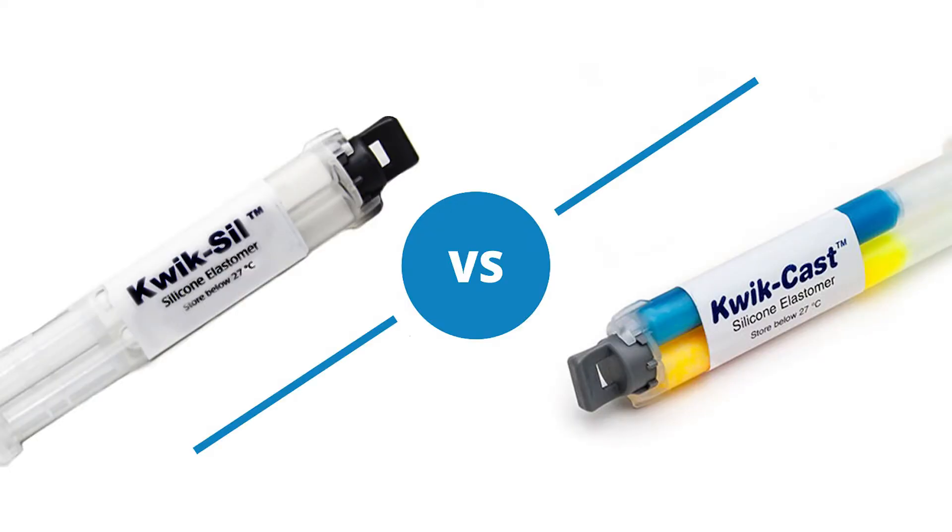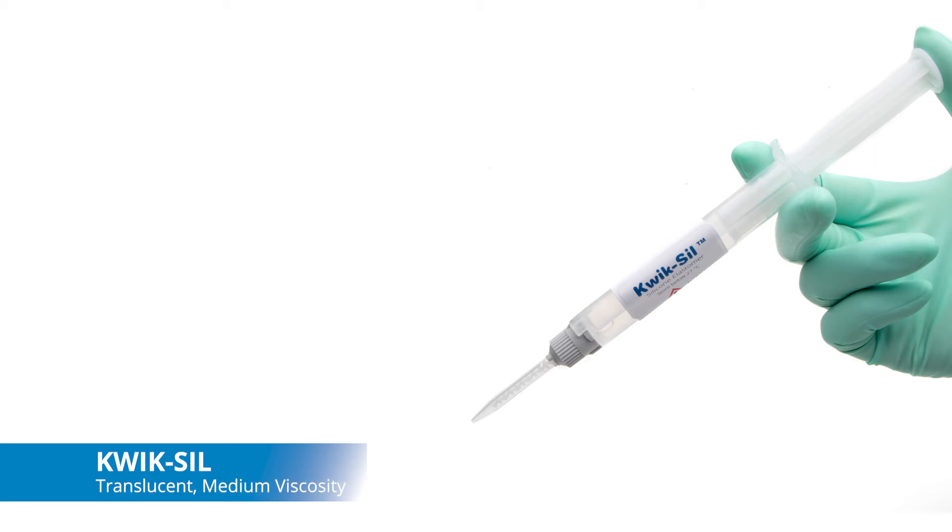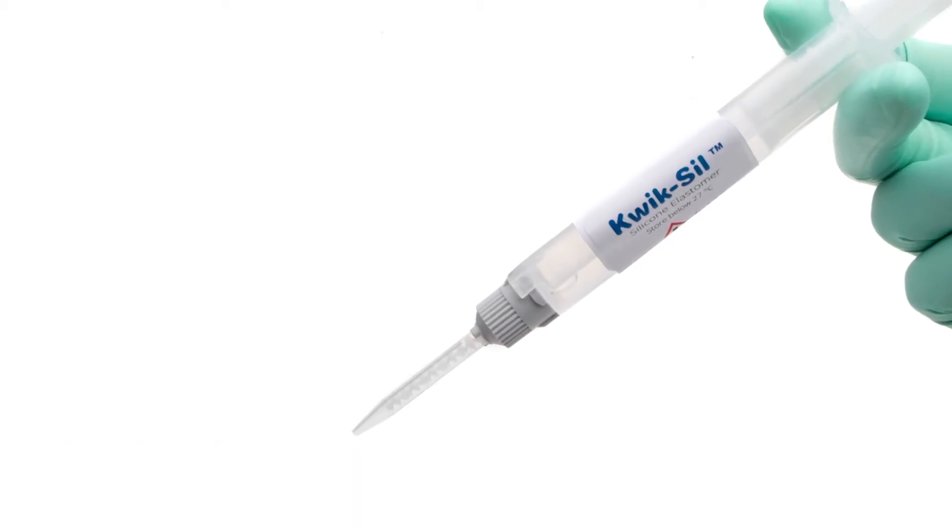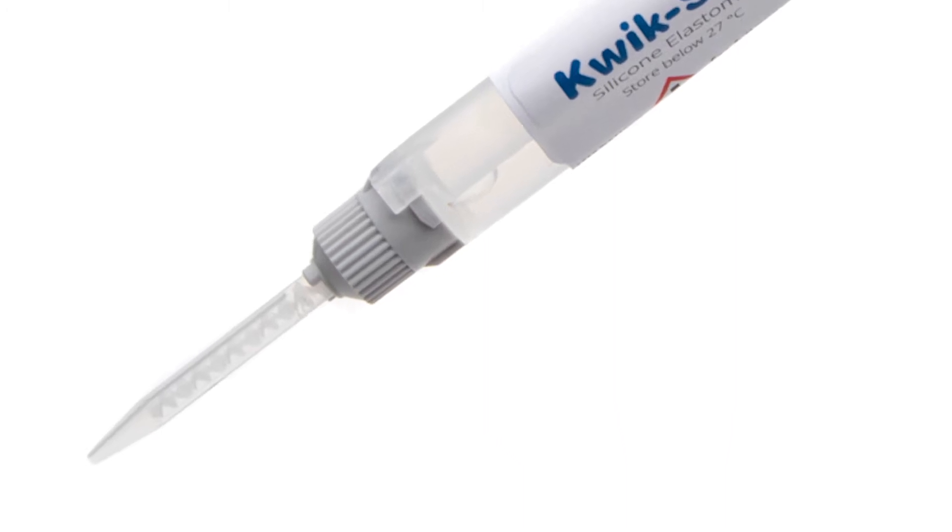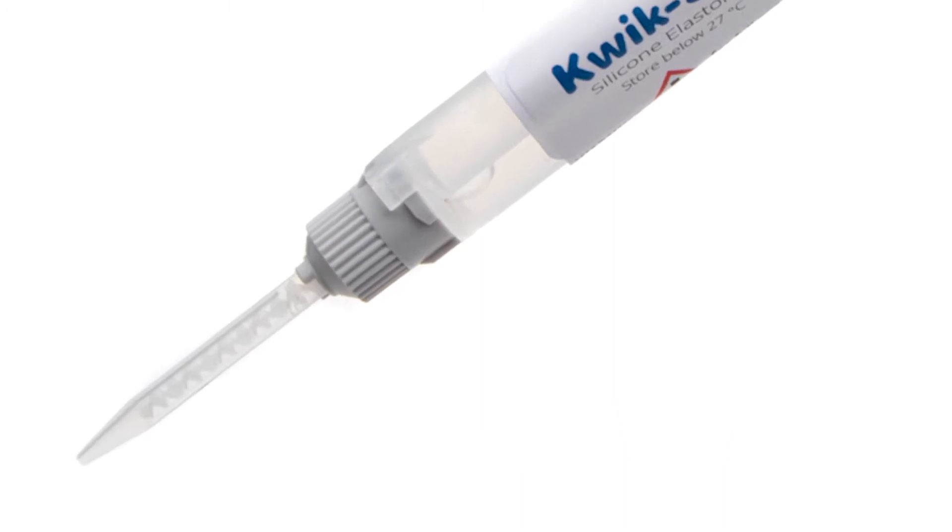Both Kwik-Sil and Kwik-Cast are silicon adhesives, but they are a little different. Kwik-Sil is a translucent, medium-viscosity silicon adhesive developed for chronic peripheral nerve studies, such as anterograde tracing with fluorescent indicators or electrode recording.